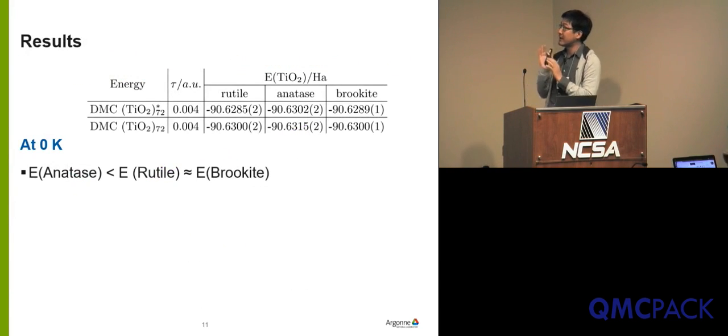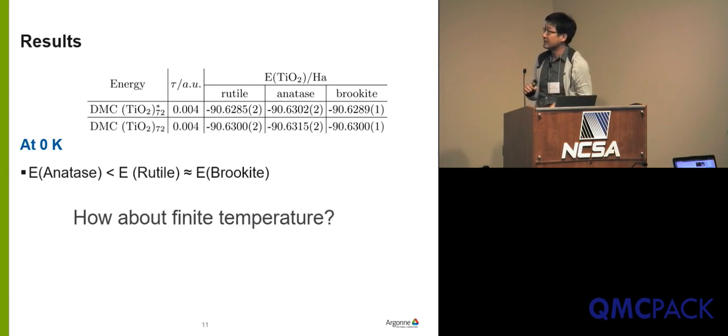Through this study, we get the result that from fixed node DMC calculation, anatase is more stable than rutile, and rutile and brookite have the same energy. We have to think if there's other energy components we missed. We are doing the calculation at zero K, but most enthalpy studies in experiment are done at finite temperature, at room temperature. We'd like to take into account the temperature effect on phase stability of these polymorphs.